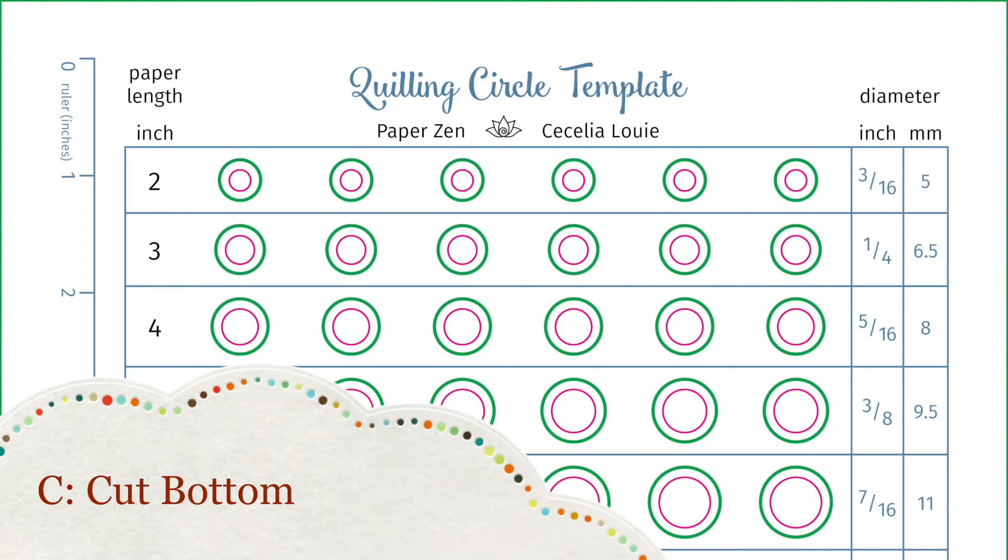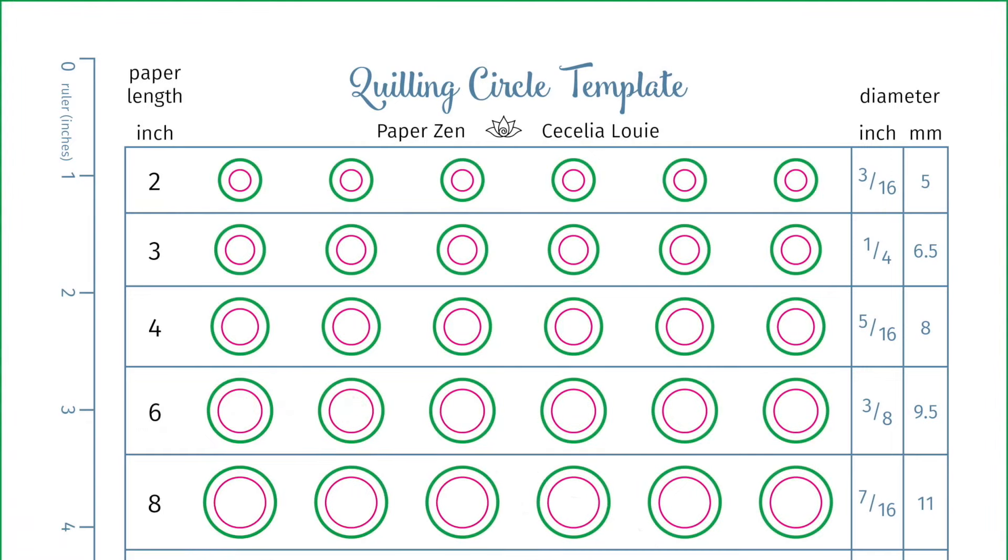For file C, I'm going to use this file to cut larger circles. Why make the bottom circles larger? Because then I don't have to worry about lining up the circles perfectly when I glue all these layers together.